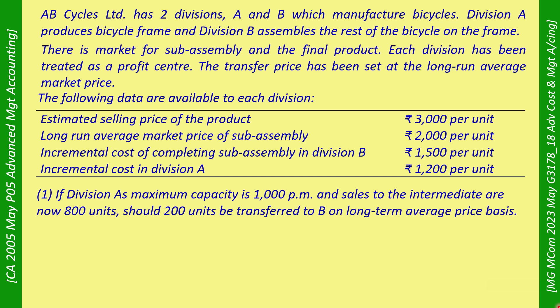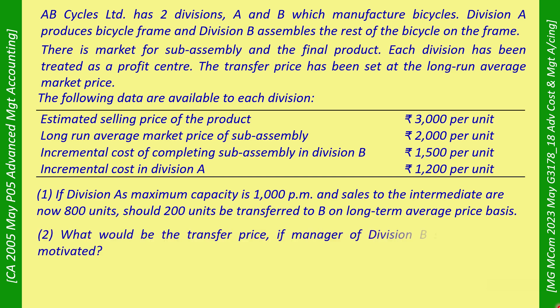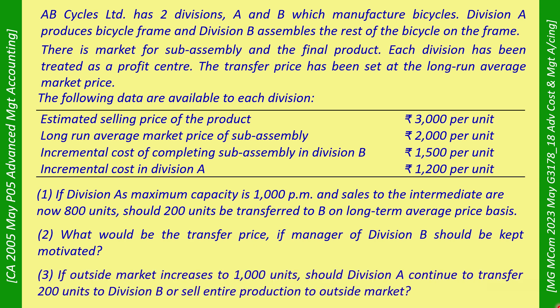Question 1: If Division A's maximum capacity is 1,000 units per month and sales to the intermediate market are now 800 units, should 200 units be transferred to Division B on a long-term average price basis? Question 2: What would be the transfer price if the manager of Division B should be kept motivated? Question 3: If the outside market increases to 1,000 units, should Division A continue to transfer 200 units to Division B or sell the entire production to the outside market?